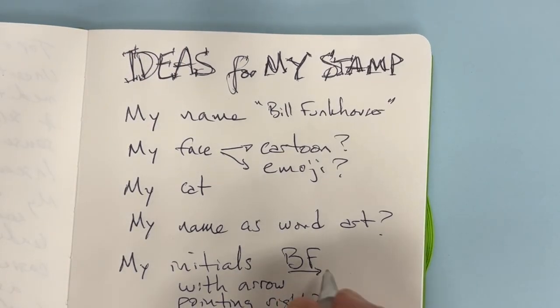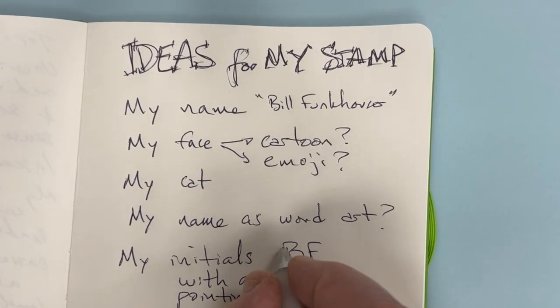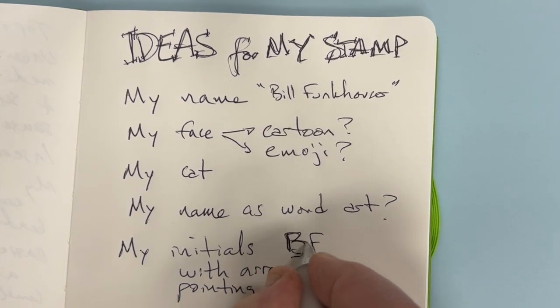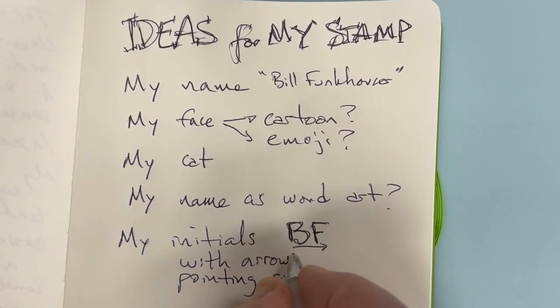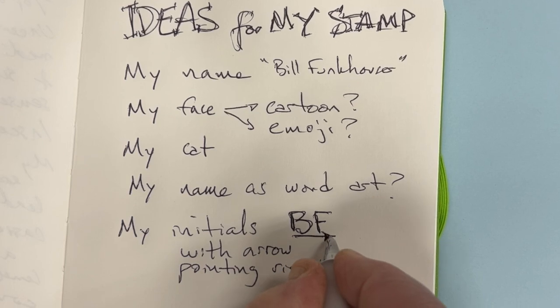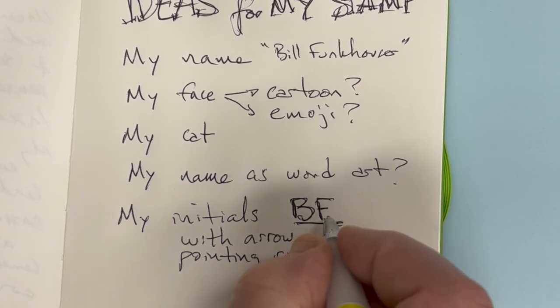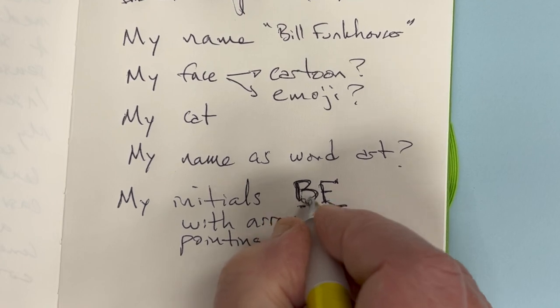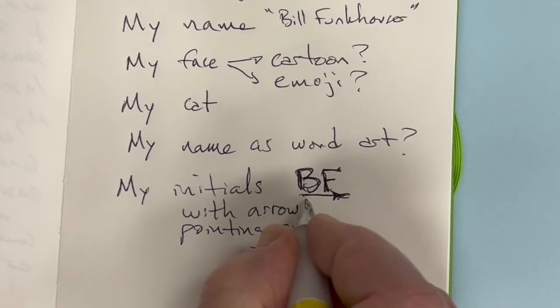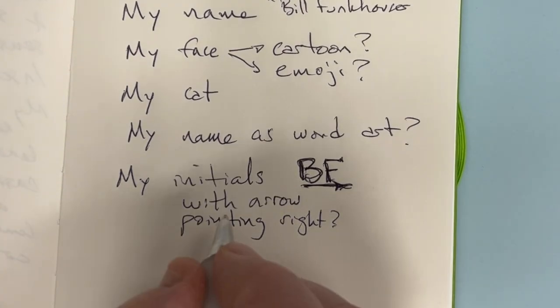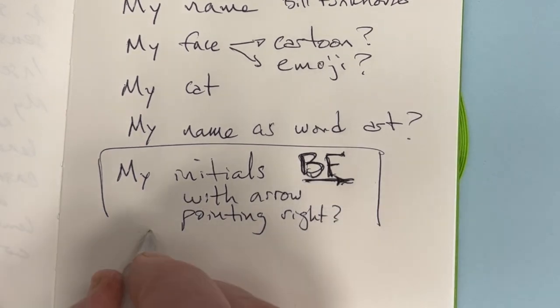I was thinking I would make a stamp to represent me. I haven't spent much time thinking about this stamp, but I jotted down a few ideas and I thought I could make my initials BF. To add an image to my initials, I'll put an arrow pointing to the right under the two letters.